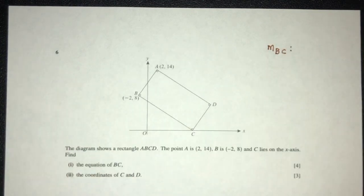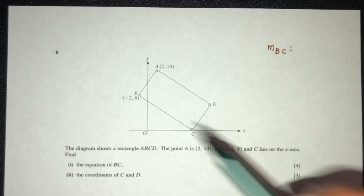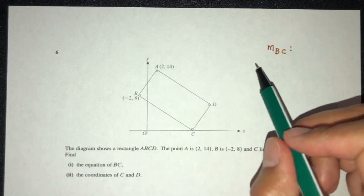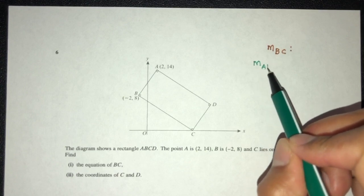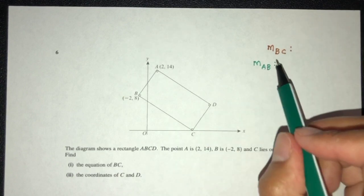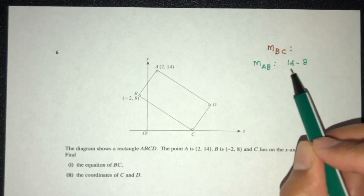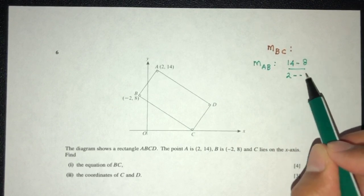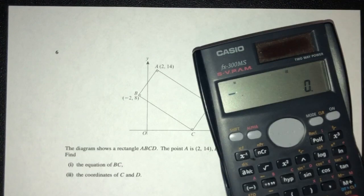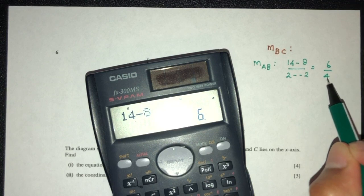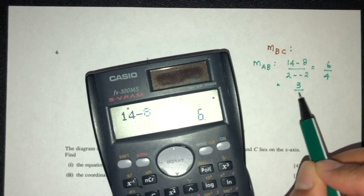Now, by observation, we can see that the line AB is perpendicular to the line BC. So we can use the gradient of AB to find that of BC. So AB first, that will be y2 minus y1 over x2 minus x1. So 14 minus 8, that should be 6 divided by 4, that should be 3 over 2.